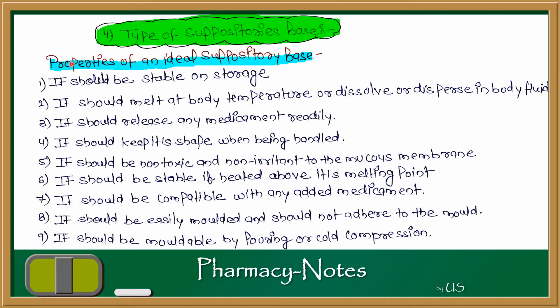The properties of an ideal suppository base: it should be stable on storage and should not melt at storage conditions. They should melt at body temperature and dissolve or disperse in body cavities. So if it is in outer temperature or in specific storage conditions, it will remain solid, but as it reaches body temperature, like when inserted into the rectum, it should melt and also disperse or release.